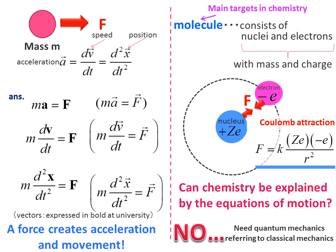Therefore, you may think that the world of chemistry can be entirely explained by the equation of motion ma equals F, where F is the coulomb force. But unfortunately, the answer is no. The equation of motion introduced earlier, ma equals F, is also called classical mechanics.